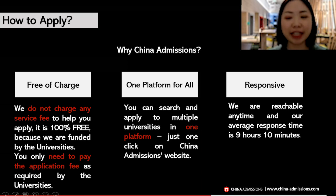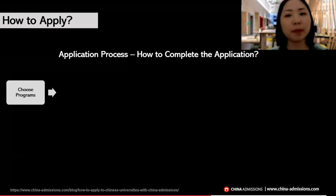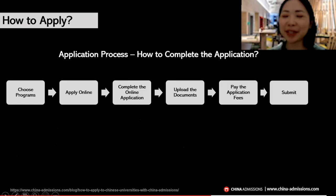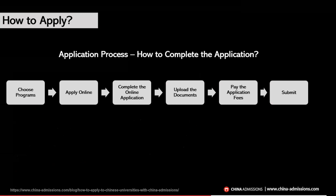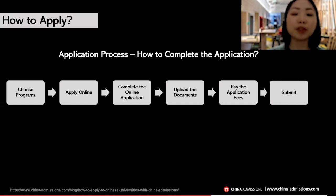The last reason is that our team works very hard to be as responsive as possible. We are reachable anytime and our average response time on email is usually 9 hours and 10 minutes. Now, how to complete the application — it's very simple. I tried it myself and it took me only about 10 to 12 minutes. First, choose your program, then apply online on China Admissions, complete the online application with your personal information, education background, work experience, and financial information, then upload your documents and pay the application fee.